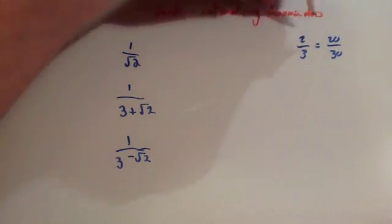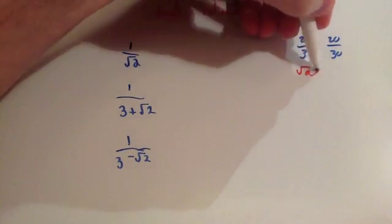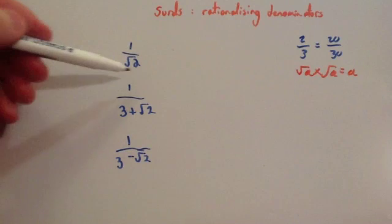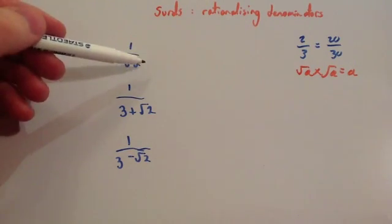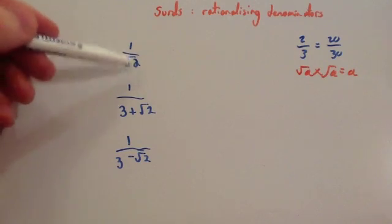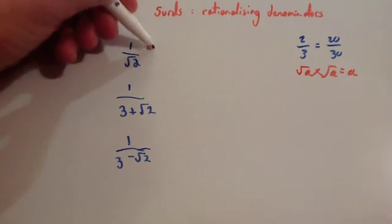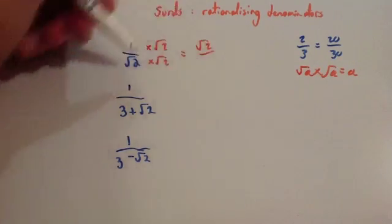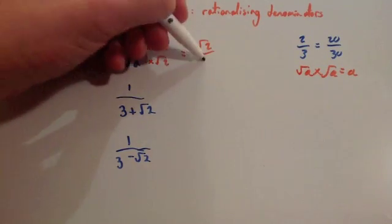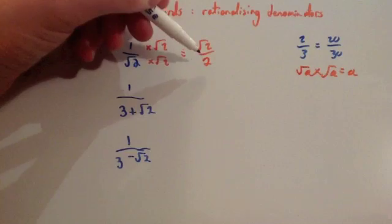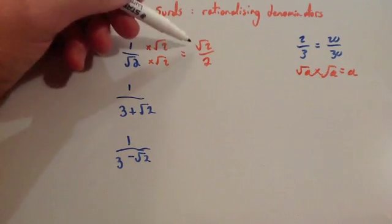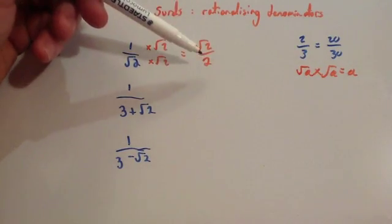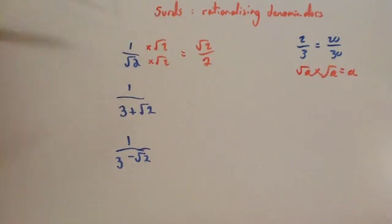Remember the rule: if you have root a times root a, you get a. So with this, we would want to get rid of the root 2 on the bottom line. If I times the top and the bottom by root 2, I'm going to get 2 on the bottom line and I get rid of the square root sign. So the top line would become root 2, and the bottom line — root 2 times root 2 is 2 — so they would become root 2 over 2. So 1 over root 2 is the same as root 2 over 2. If you were given an answer, you'd always want to give it as a fraction with a rational denominator, so a rational number 2 on the bottom line rather than root 2.